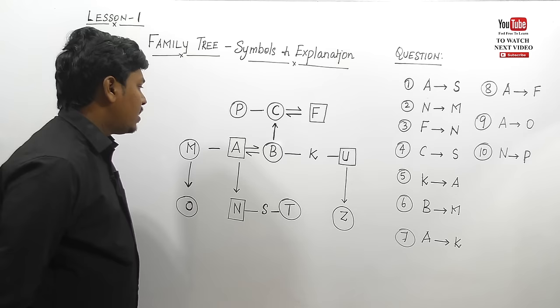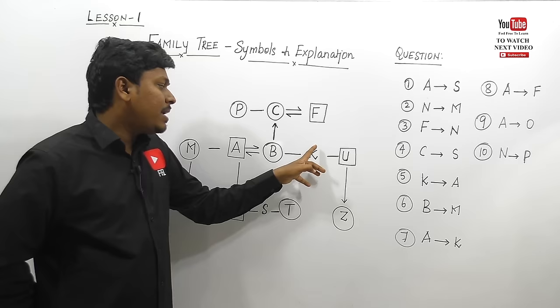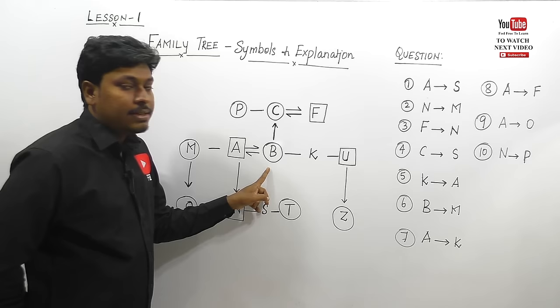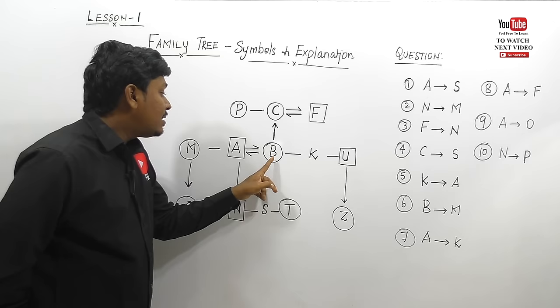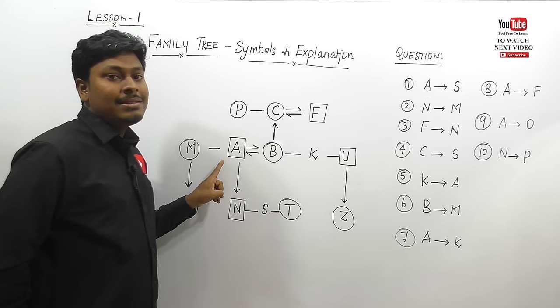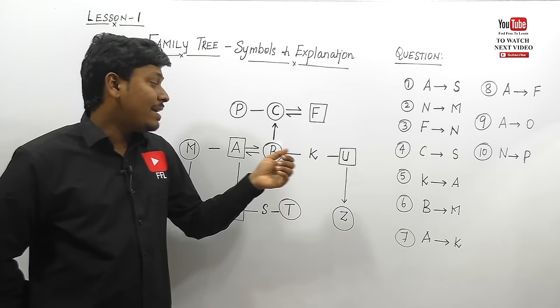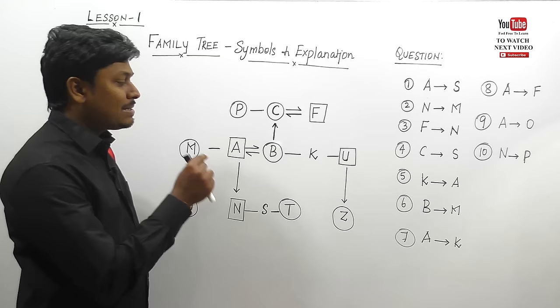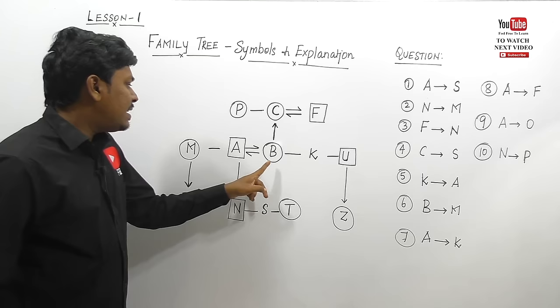Question 5: K to A — from K, what is the relation of A? We don't need to worry about K's gender because we're targeting the relation to A. K knows that B is a sister. Sister's husband is A. Sister's husband is called brother-in-law. So the answer is brother-in-law.